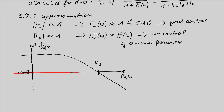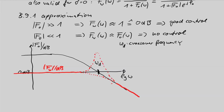For low frequencies the first approximation is valid (large gain → 0 dB closed loop), and for high frequencies the second approximation is valid (small gain → closed loop ≈ open loop). So we can draw the closed loop magnitude curve: where the open loop gain is large, the closed loop Bode plot is at 0 dB. Where the magnitude curve is well below 0 dB, the closed loop equals the open loop. However, in the crossover frequency region near ω_d, neither approximation is valid — the behavior there could follow different curves.